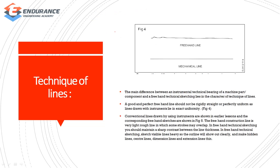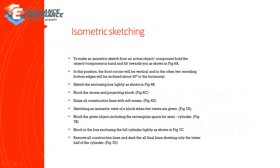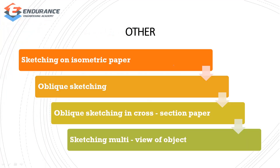The next one is the technique of lines. In freehand sketching, we have mechanical lines. The next sketching types include sketching on isometric paper, oblique sketching on cross-section paper, and multi-view sketching of objects.